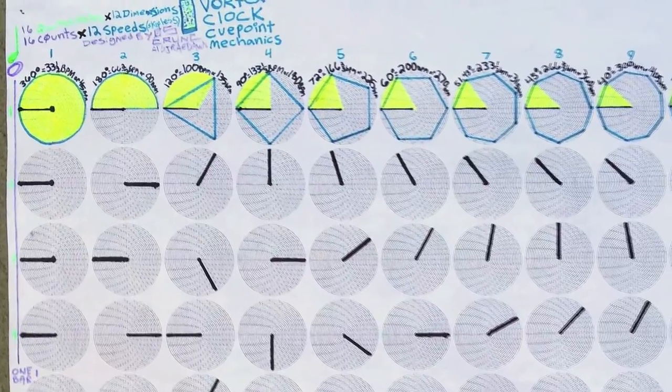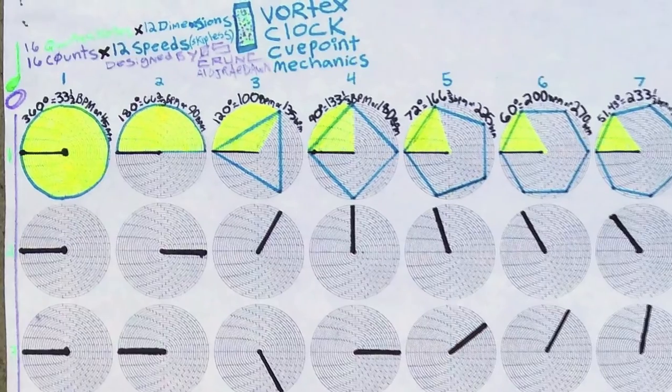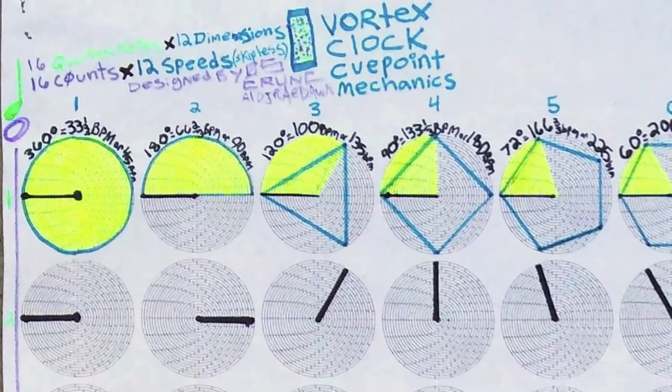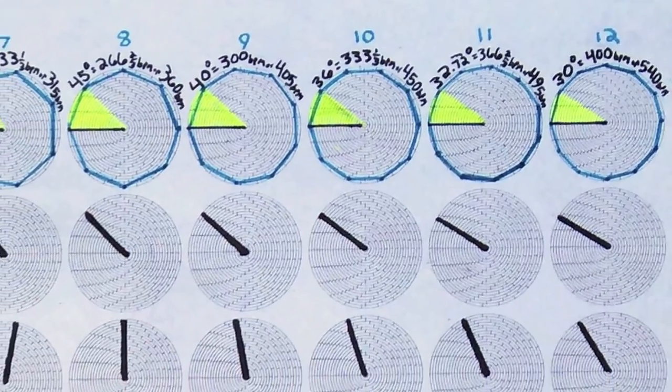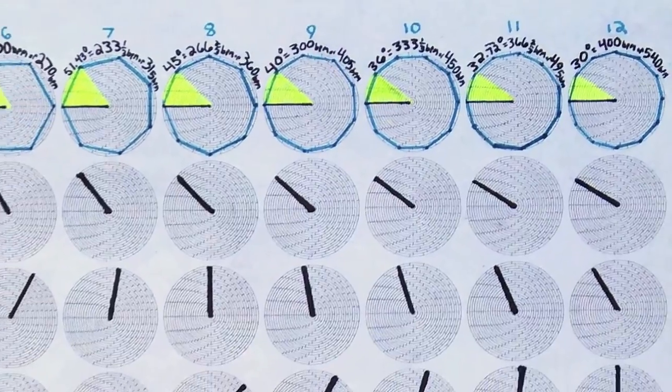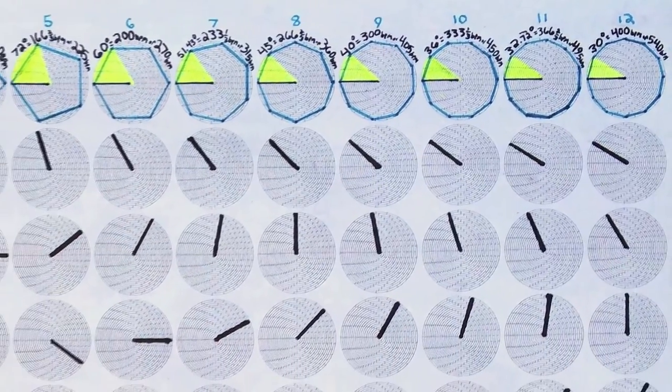Each column depicts only the speed that is labeled at the top starting with the circle that represents 33 and 1 third BPM all the way to the 12-sided dodecagon that represents 400 BPM at normal speed.